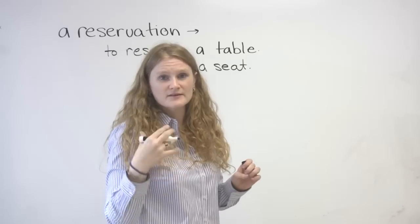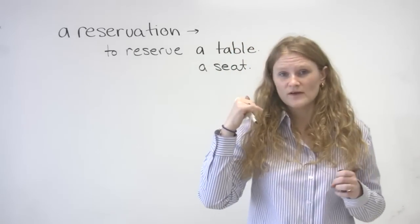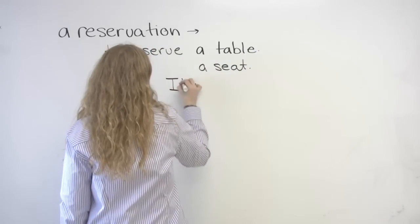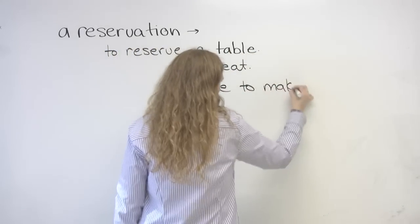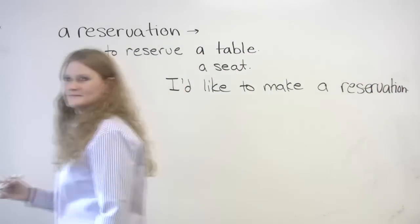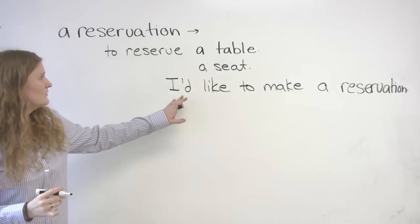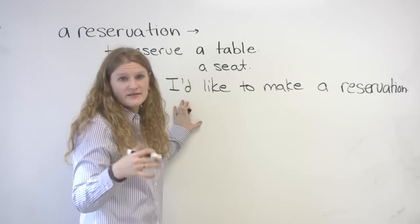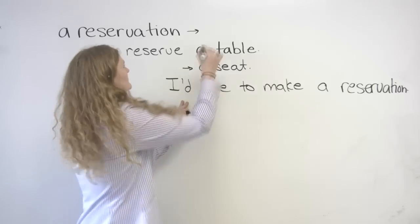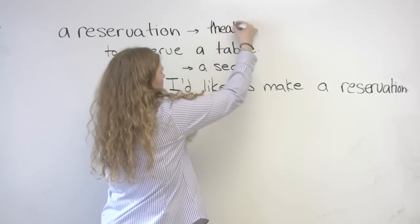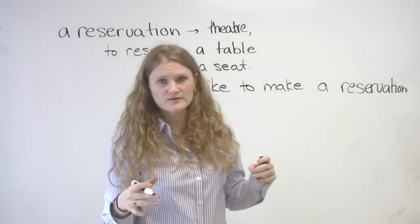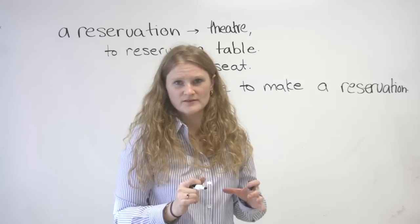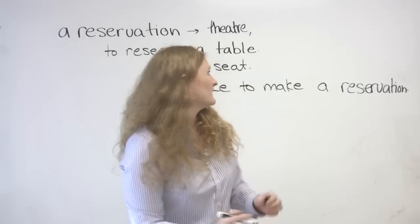The verb we use with this is make. So you can call the restaurant and say, 'I'd like to make a reservation.' When we make a reservation, it's usually for a seat or a place. We can also do this at the theater — you would reserve a seat. In Canada, when we go to the movies, it's not necessary to reserve a place to sit. It's what we call a first-come, first-served basis — you get there first, you get the best seat.